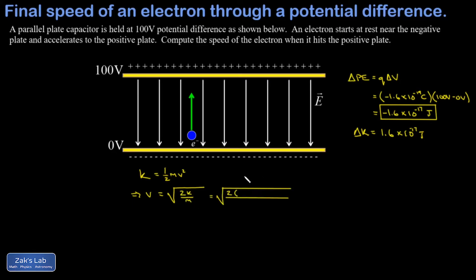So I plug in the kinetic energy of my electron, 1.6 times 10 to the negative 17 joules. And I plug in the mass of the electron, which you may need to look up. It's 9.11 times 10 to the negative 31 kilograms. And I get 5.93 times 10 to the sixth meters per second.